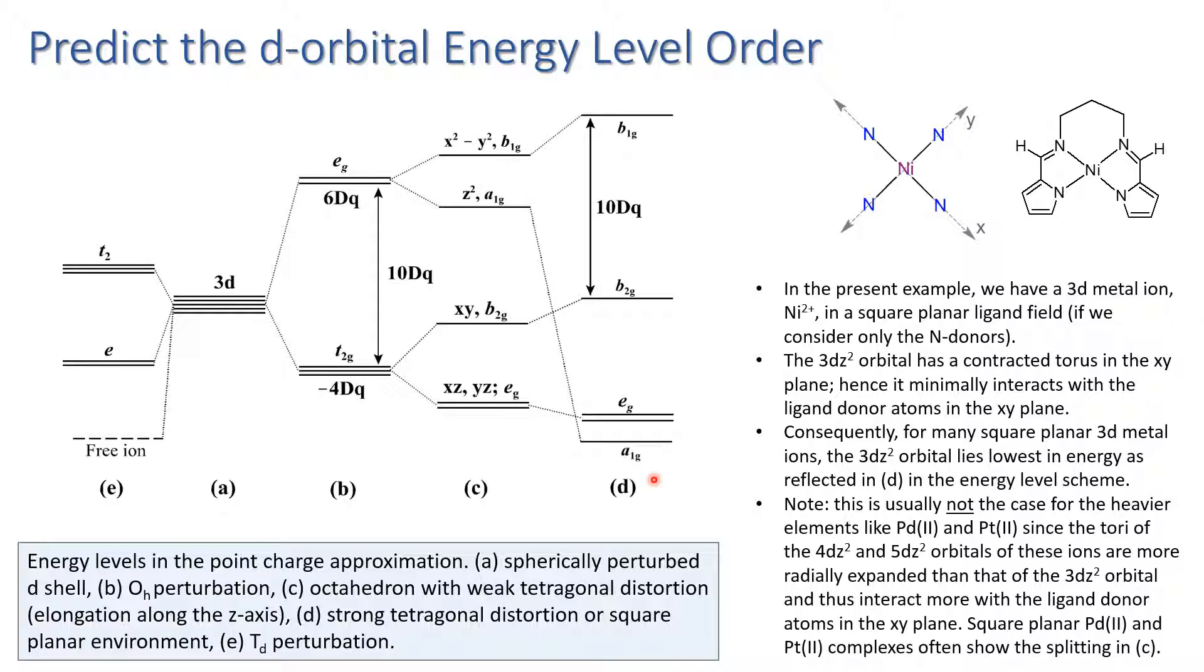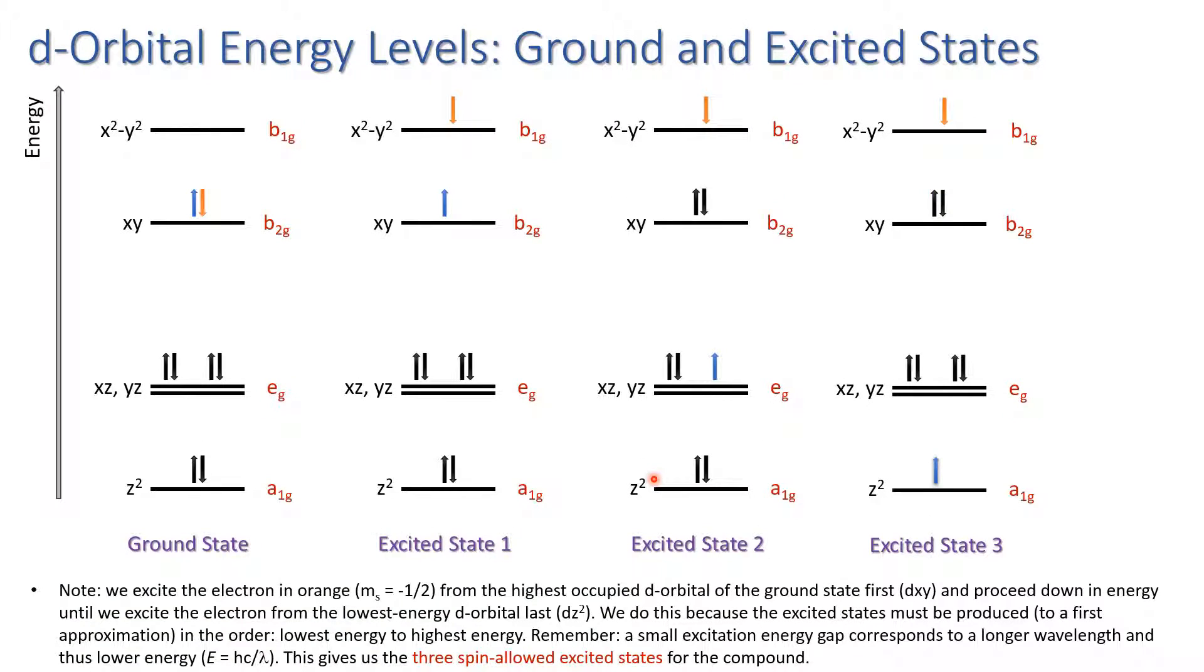We're going to use the d orbital energy level sequence in D4h for determination of the term symbols for the ground and excited state. Step one, we want to write down ground state and excited state electron configurations for our system of interest. The ground state, because it's a nickel 2 ion, is of course completely all paired up in terms of electrons and we have eight of them.